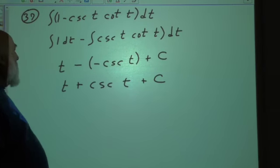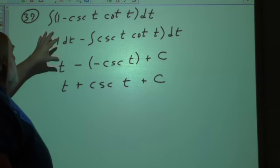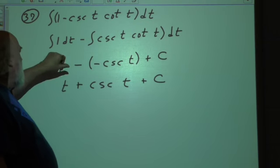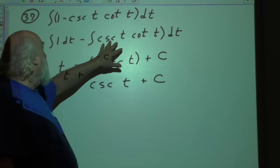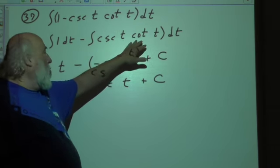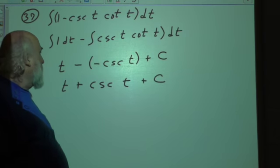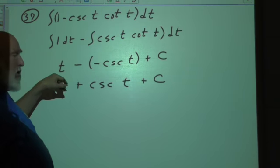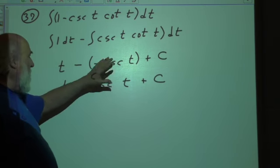For number 37, same kind of deal here. We're going to divide this up into two parts here. We have the one dt here and cosecant t cotangent t here. We know from the previous section that this will actually just be t.